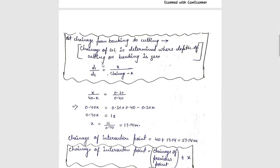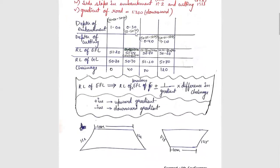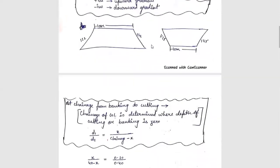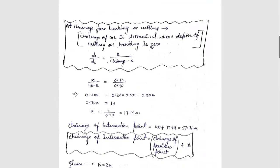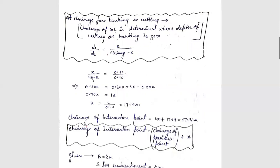The formula is: D1 upon D2 equals x upon chainage minus x. The chainage interval value was 40, D1 was 0.30 and D2 was 0.40. So x upon 40 minus x, with D1 = 0.30 and D2 = 0.40. We calculated x and got the intersection point at 17.14.